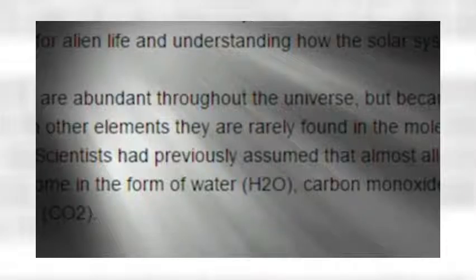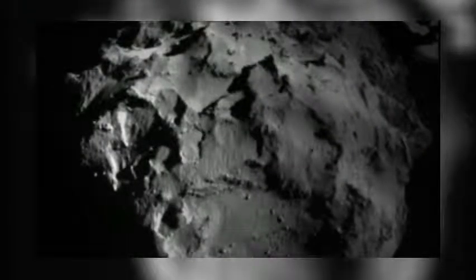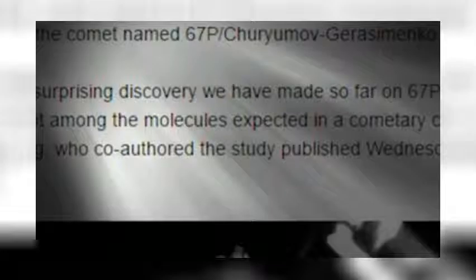But because they react very easily with other elements, they are rarely found in the molecular form known as O2. Scientists had previously assumed that almost all oxygen in a comet would come in the form of water, carbon monoxide, or carbon dioxide. First of all, let me stop you. You shouldn't assume, because when you do, it makes an ass out of you and me. Now that we've learned something new, let's move on.